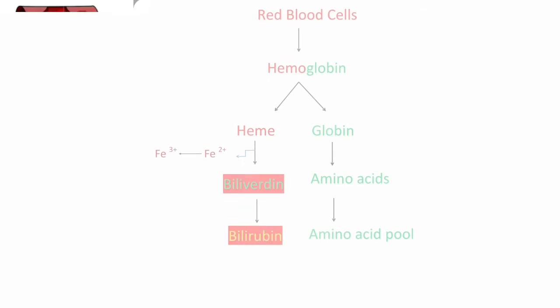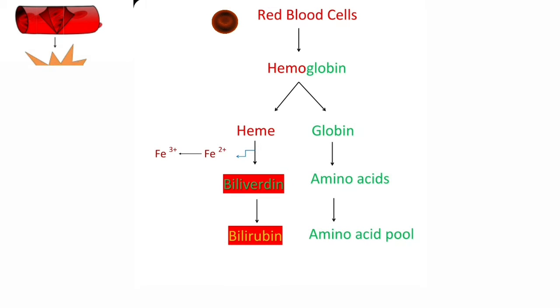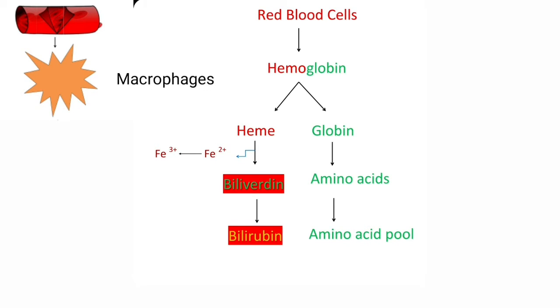Formation of bilirubin. The lifespan of red blood cells is approximately 120 days. After 120 days, the older red blood cells are taken up from the circulation and degraded by the macrophages of the reticuloendothelial system, particularly in the spleen and liver. This degradation liberates hemoglobin.